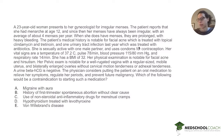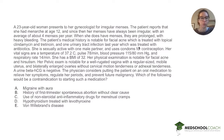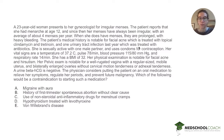A 23-year-old woman presents to her gynecologist for irregular menses. She reports menarche at age 12, and since then her menses have always been irregular, with an average of about four menses per year. When she does have menses, they are prolonged with heavy bleeding. Her medical history is notable for facial acne treated with topical clindamycin and tretinoin, and one urinary tract infection last year treated with antibiotics. She is sexually active with one male partner and uses condoms for contraception. Her vital signs are temperature 37.2°C, pulse 78, BP 115/80, RR 14, and BMI of 32.